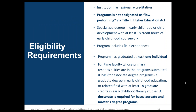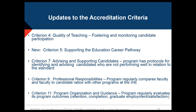Regarding the eligibility piece, the number 18 appears in a couple of different places. The bullet near the top refers to 18 credit hours of early childhood coursework within the degree program itself — for an associate degree program, that would be 18 credit hours within that particular program. The very last bullet mentioning 18 graduate credits has to do with the qualifications of the full-time faculty member meeting the faculty eligibility requirement, so the number 18 shows up in two distinct contexts.